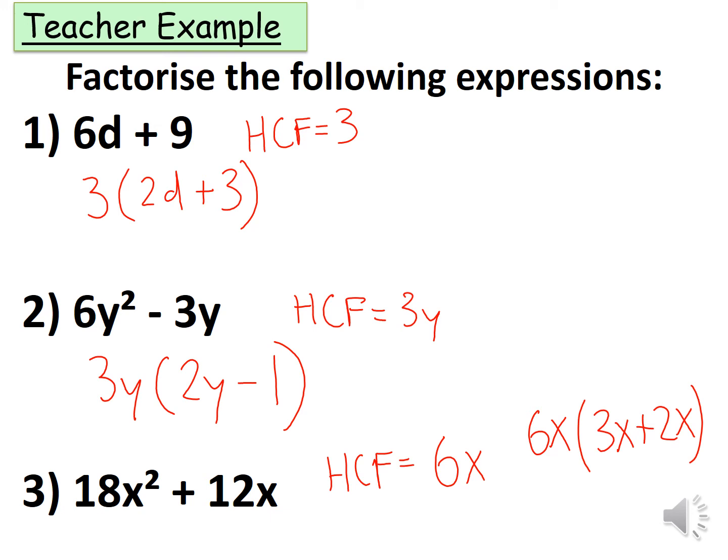Now let's check if this is correct. So 6x times 3x gives me 18x², and 6x plus 2x gives me 12x². Therefore I've made a mistake and what I need to do is remove the x from the 2x.